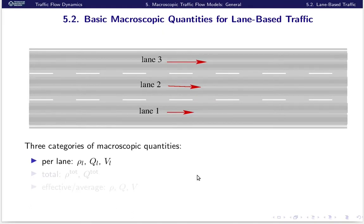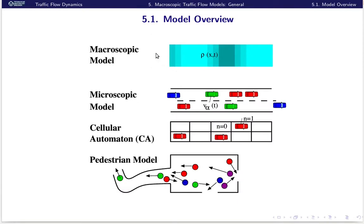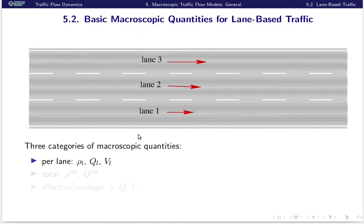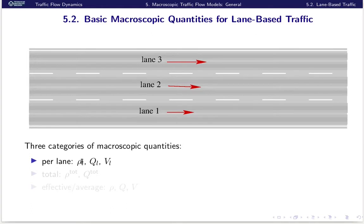Now let's come to the basic macroscopic quantities for lane-based traffic. We consider in the rest of this lesson the macroscopic model, mostly of car traffic but also a macroscopic version of a pedestrian model. The simplest configuration is a multi-lane straight homogeneous road. We denote the lane index with L. You can number lanes from right to left or left to right — you only need to be consistent. In each lane, we have macroscopic quantities: density (vehicles per meter), flow (vehicles per second), and speed (meters per second).